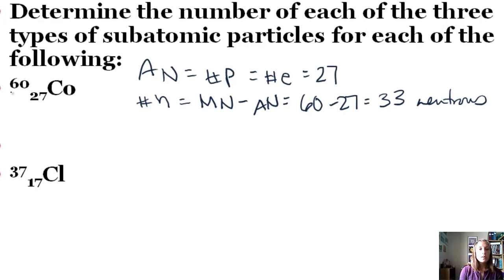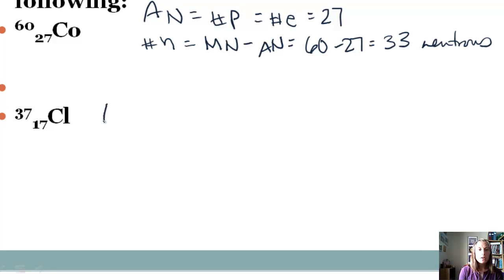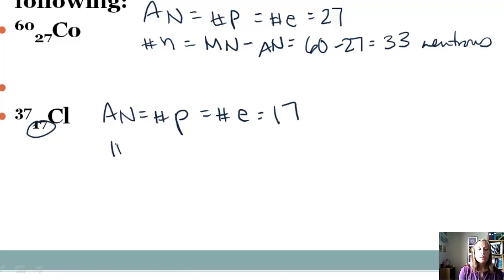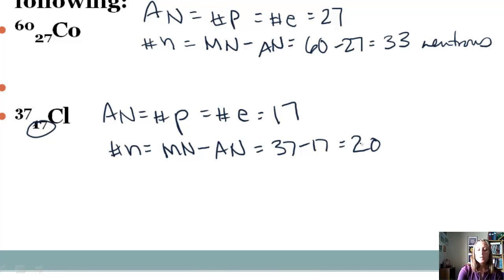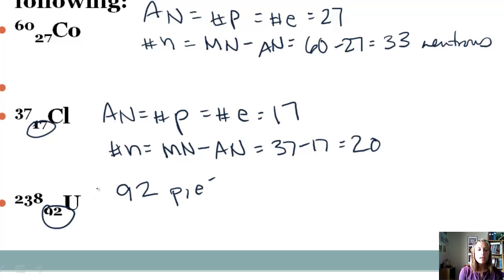Next is the symbol for chlorine. The atomic number is 17, so we have 17 protons and 17 electrons. For neutrons: mass number minus atomic number equals 37 minus 17, giving us 20 neutrons. For uranium: the atomic number is 92, so 92 protons and 92 electrons. Neutrons equal 238 minus 92, which gives us 146 neutrons.